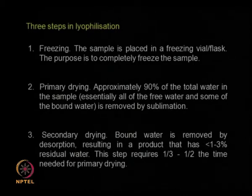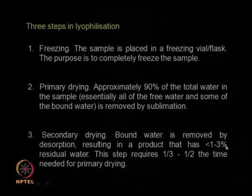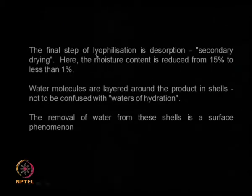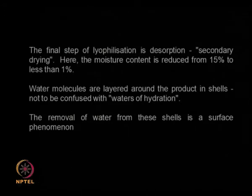Some free water and some bound water go away during primary drying. Then by increasing the temperature you desorb whatever water remains — the secondary drying or desorption step. Finally, you end up with about 1 to 3 percent residual water. This step also takes time; almost 50 percent of the total drying time is taken for removing the unbound water, with the secondary step taking additional time. The final moisture content is reduced to almost 1 percent.